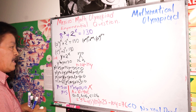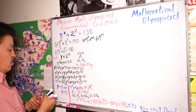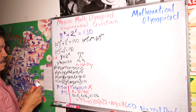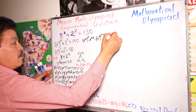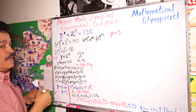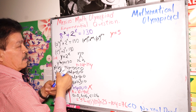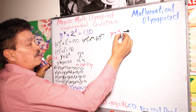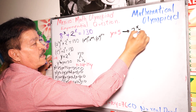Therefore this quadratic is not a solution. We have only one solution: Y equals 5. Moving back to our substitution, 2 to the X power equals 5.